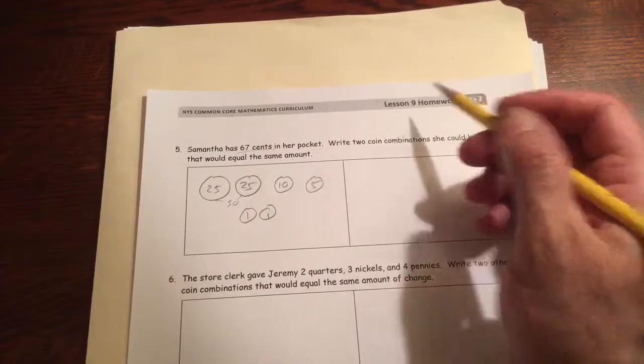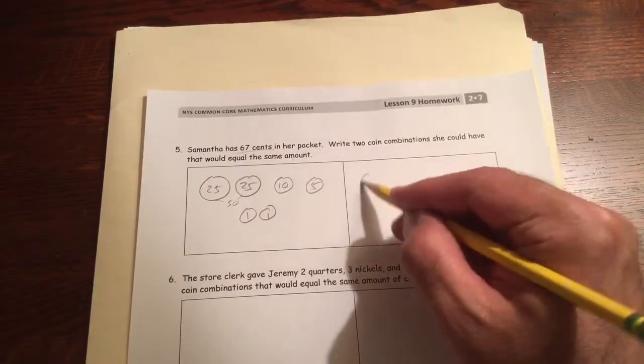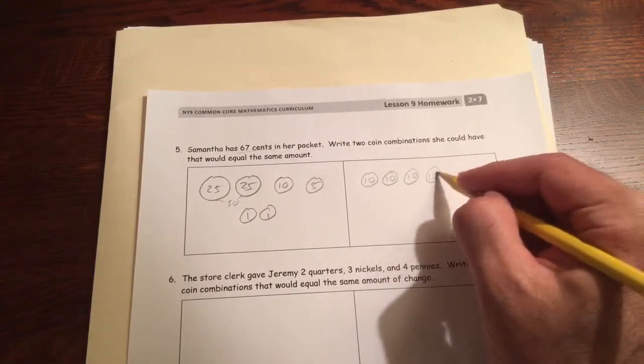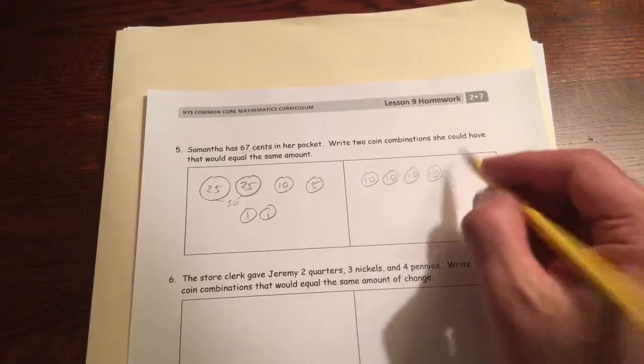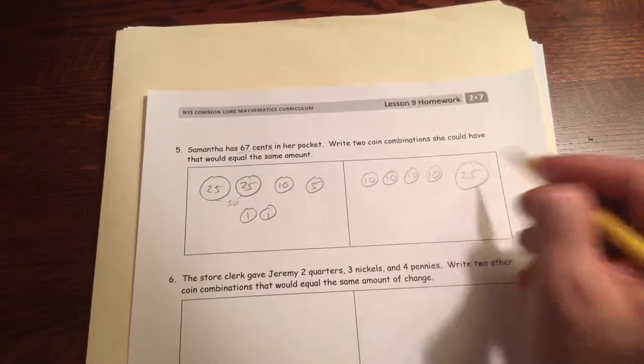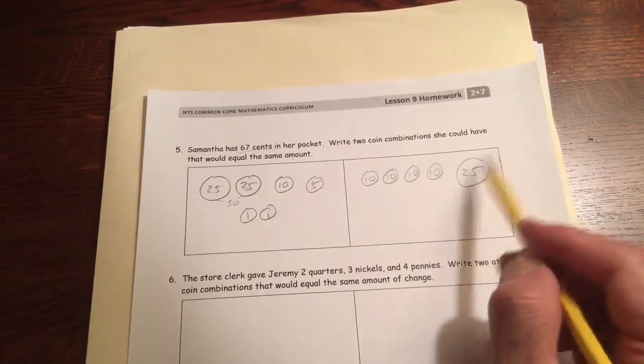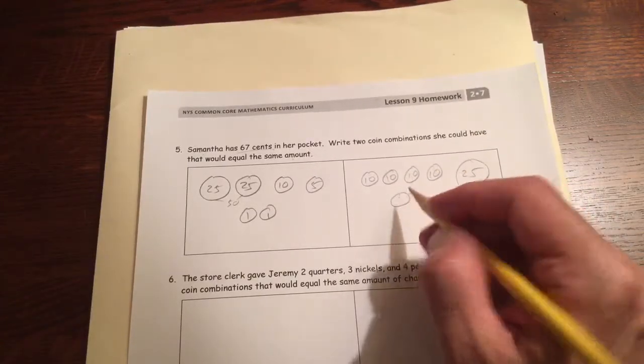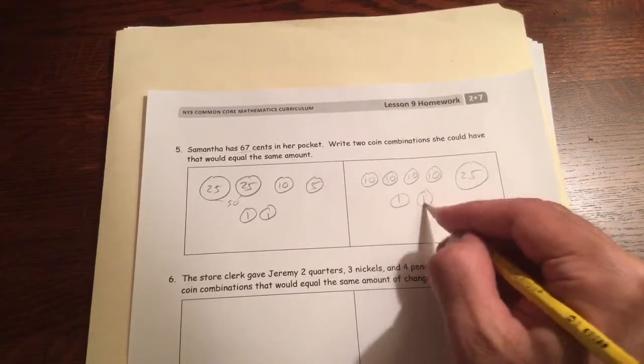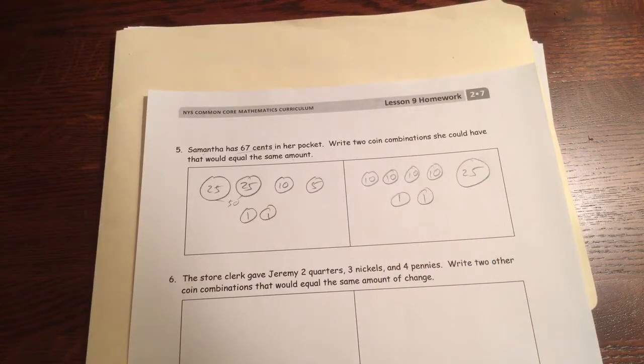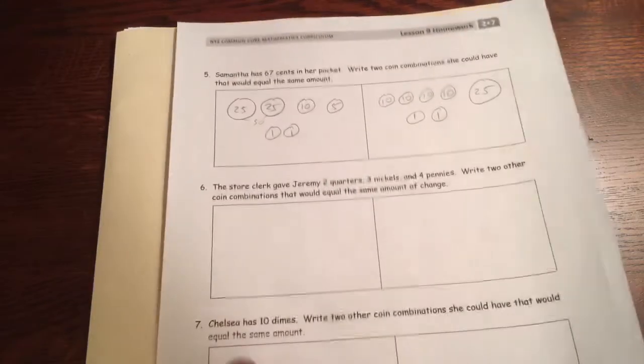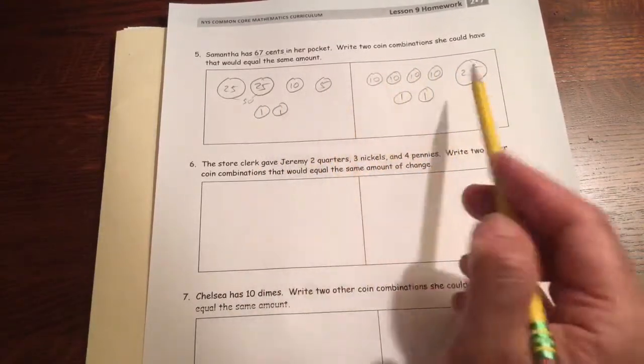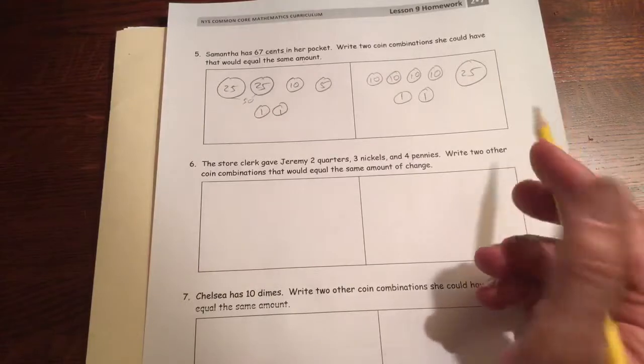And that's one way to get 67 cents. Two quarters, a dime, a nickel, and two pennies. Another way to do it, I could draw 10, 20, 30, 40, and a quarter. So that's 65, 25, 35, 45, 55, 65, and 66, 67. That's another way to do it. Number six, there's lots of different ways you can draw 67 cents. It's just any two different ways that add up to 67 cents will be fine.